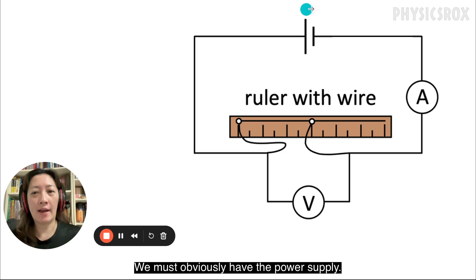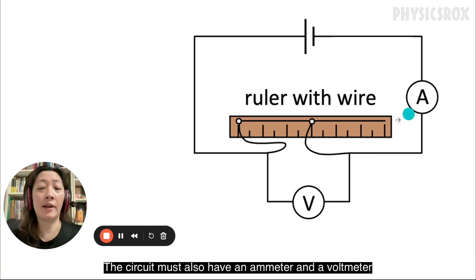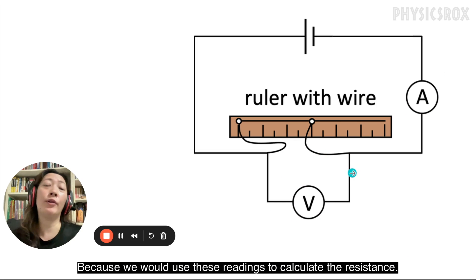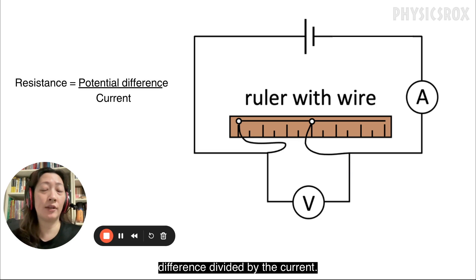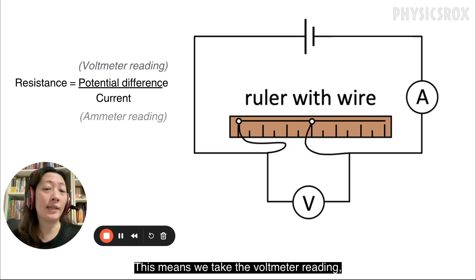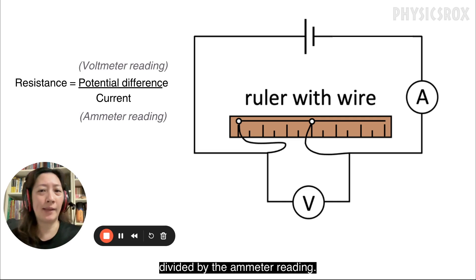We must obviously have the power supply. The circuit must also have an ammeter and a voltmeter because we would use these readings to calculate the resistance. Now how we calculate the resistance is by taking the value of the potential difference divided by the current. This means we take the voltmeter reading divided by the ammeter reading.